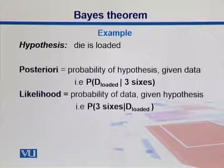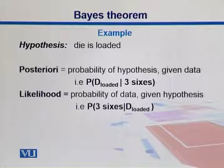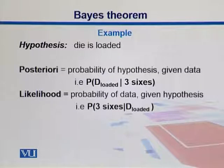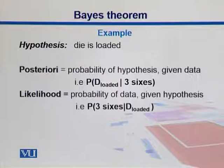Here is an example. There is a hypothesis that a die is loaded. The posteriori in this case is the probability of the hypothesis given the data. We see three sixes in a row — the data is already given — and we form our hypothesis based on that. So you see three sixes and suspect the die is loaded. You get the data and derive a probability from it — that is the posterior probability.